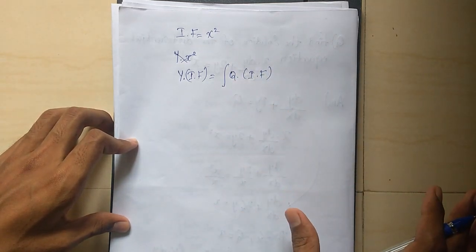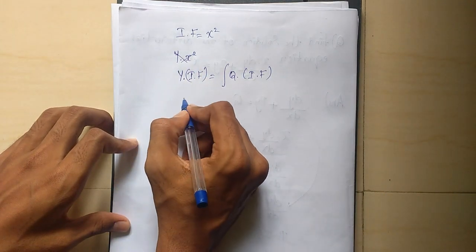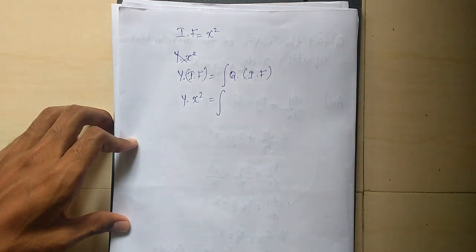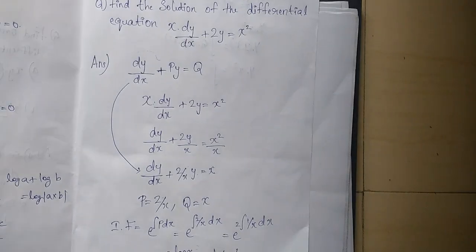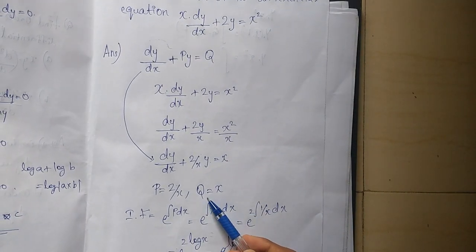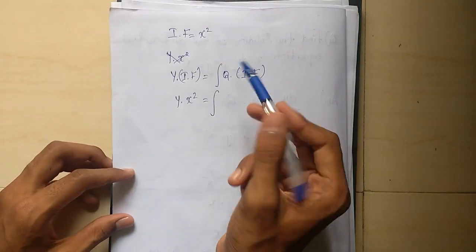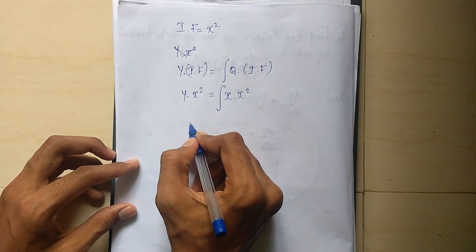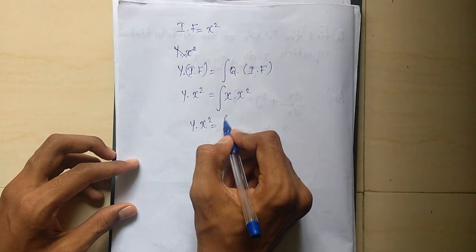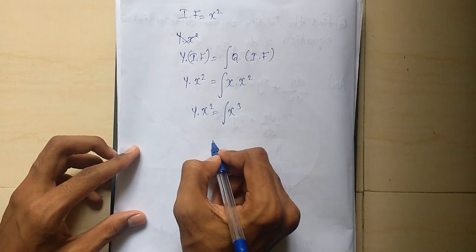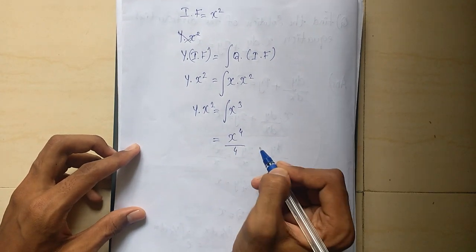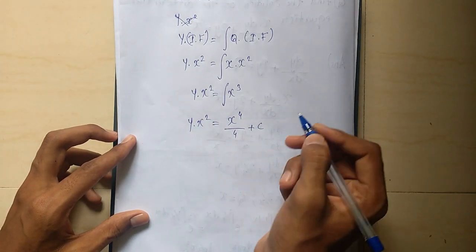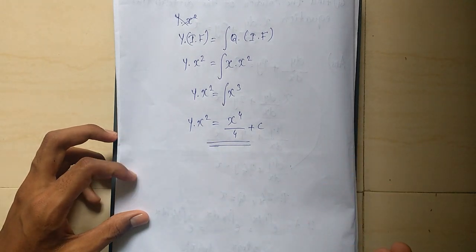So y into x squared equals the integral of Q into x squared. Q is x, so Q into x squared is x cubed. The integral of x cubed is x raised to 4 by 4. So y into x squared equals x raised to 4 by 4 plus c.